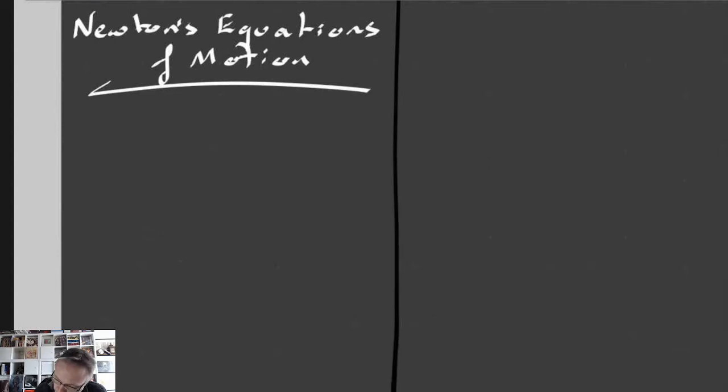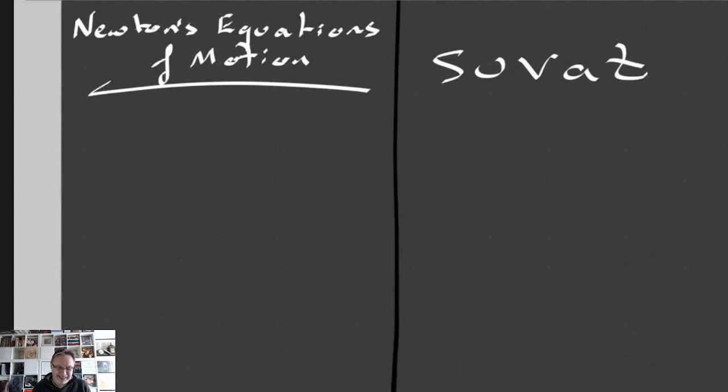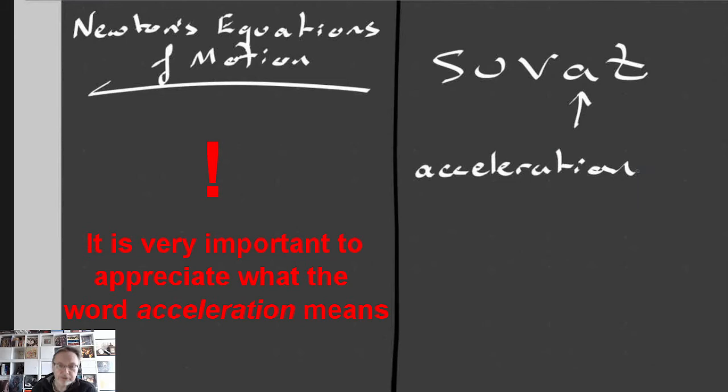Let's talk about Newton's equations of motion. Newton's equations of motion are equations for motion, often called the SUVAT equations, and they're called the SUVAT equations because those are basically the letters that are used in the equations.